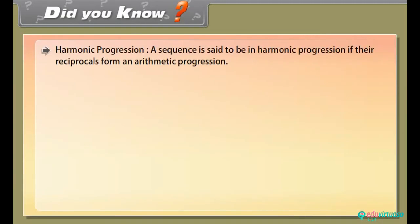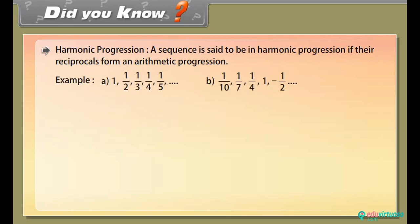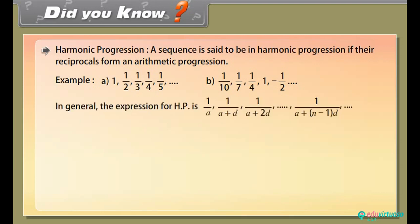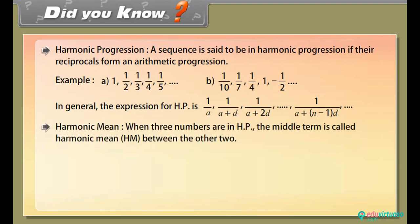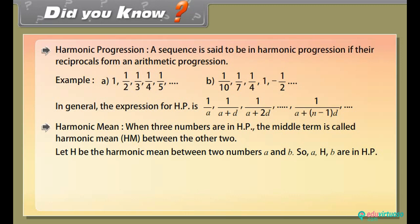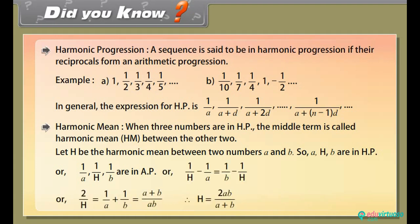Did you know? A sequence is said to be in harmonic progression (HP) if the reciprocals form an arithmetic progression. Examples: 1, 1/2, 1/3, 1/4, 1/5, and so on; 1/10, 1/7, 1/4, −1/2, and so on. Harmonic mean: when three numbers are in HP, the middle term is called the harmonic mean. Let H be the harmonic mean between two numbers A and B. Then 1/A, 1/H, 1/B are in AP, therefore H = 2AB / (A+B).